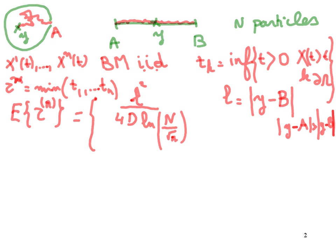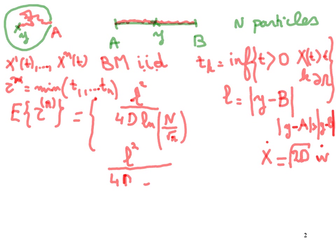D is the diffusion coefficient. To remind you, using the stochastic equation for a Brownian particle, we have ẋ = √(2D) Ẇ, where W is the classical Brownian motion with variance one. In higher dimension — I'm not going to do that today — we have a similar formula, which is L² divided by 4D, and in dimension two, instead of having just log(n), we have log(n) multiplied by log(1/ε).